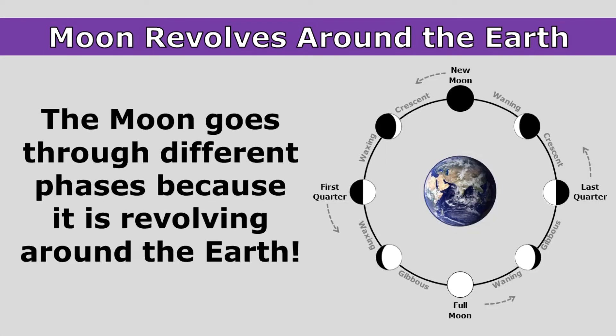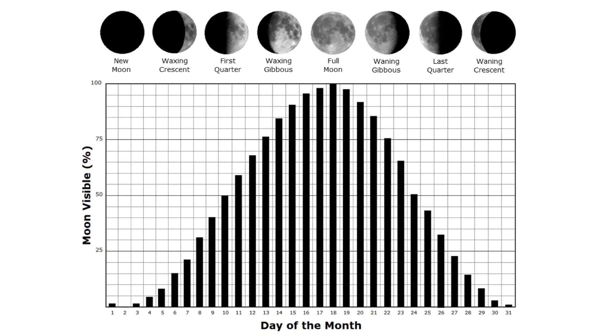The moon goes through different phases because it is revolving around the earth. As the moon orbits the earth, we see it from a different angle each night, and that causes its appearance to change. This bar graph shows how the amount of moon that we can see lit up by the sun changes in a very predictable way.